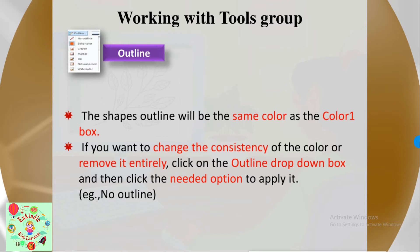On selecting any shape, the outline and fill options become active. The shape's outline will be the same color as the Color 1 box. If you want to change the consistency of the color or remove it entirely, click on the outline drop-down box and select the needed option. For example, if you don't want any color on the outline, click 'No Outline.'